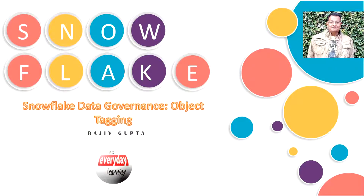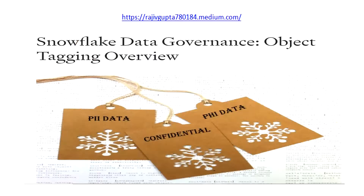Hello friends, today we are going to see a demo on a new data governance feature of Snowflake — object tagging. This feature is currently in private/public preview but will soon be released as GA. Tagging falls under data governance and enables organizations to track sensitive data for compliance, discovery, protection, and resource usage use cases.